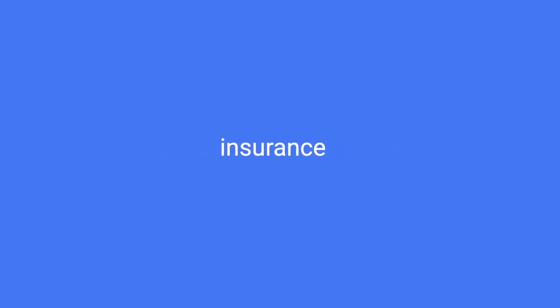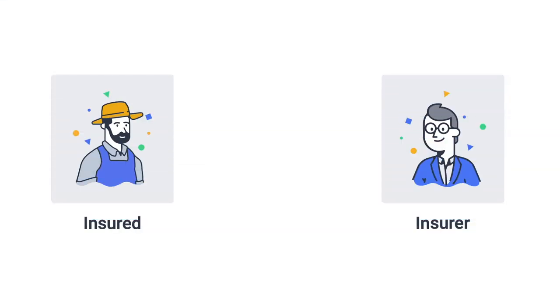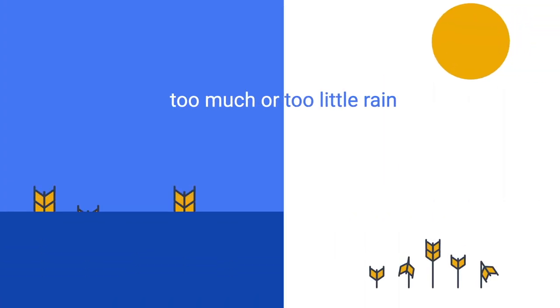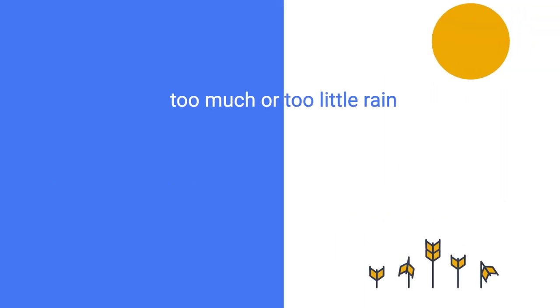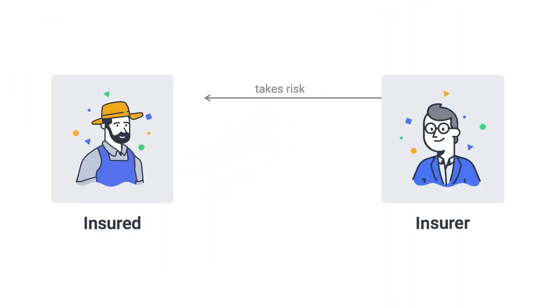So, what is an insurance? Insurance is a means of protection from financial loss. An insurance company takes over risks from a customer, often called the insured. Insurable risks can be events related to weather like too much or too little rain, but also the delay of a booked flight or a classic car liability insurance. The insurance promises to compensate the insured in the event of a covered loss. In return, the insured pays a premium.